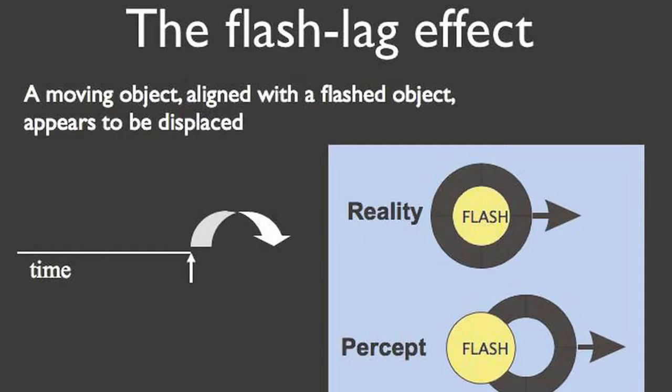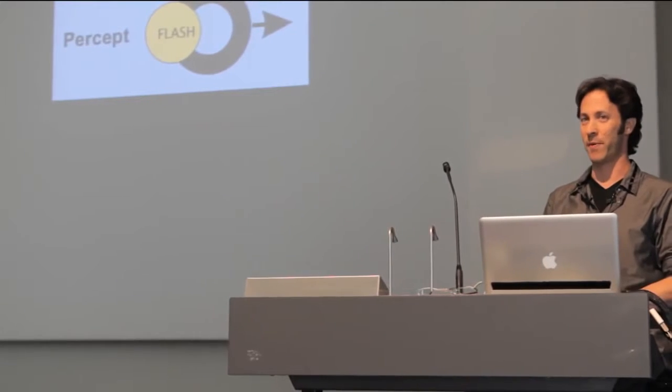The first one I'll show you is a very simple visual illusion called the flash lag effect. If you have a moving object, let's say in this case a ring moving to the right, and you flash something right in the middle while it's moving, that's what actually hits your retina. But what you perceive is that the ring was ahead of the flash.